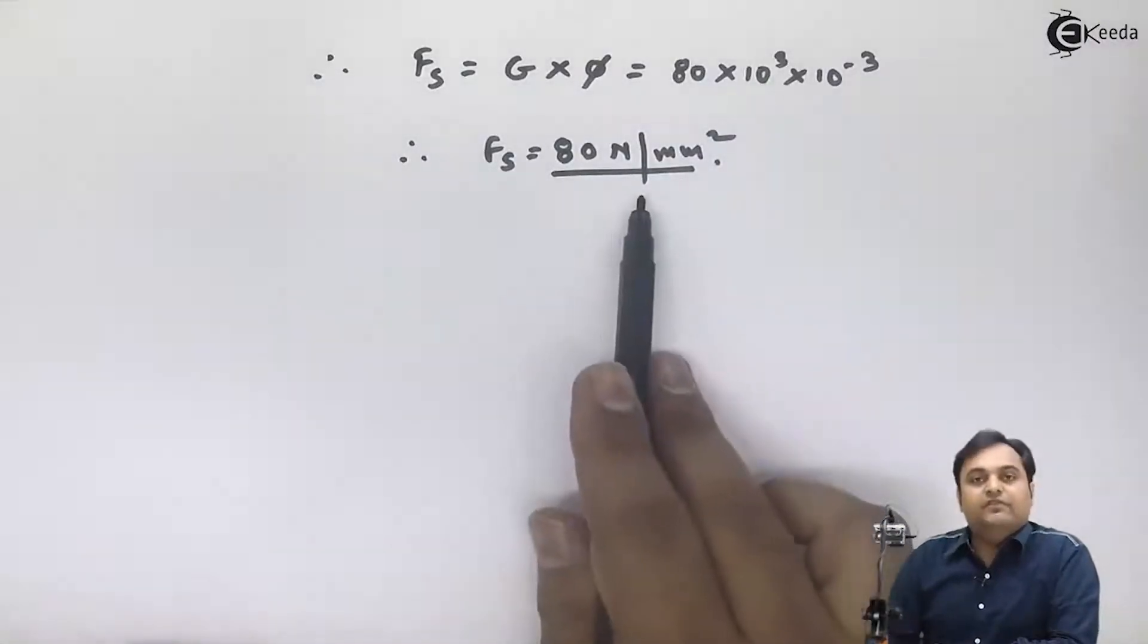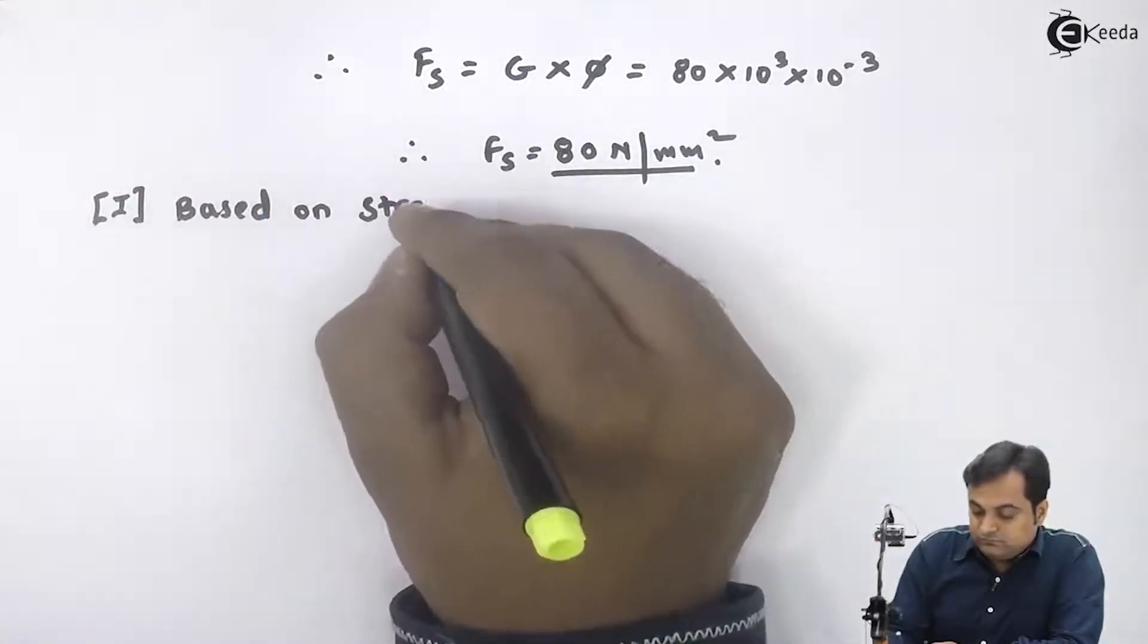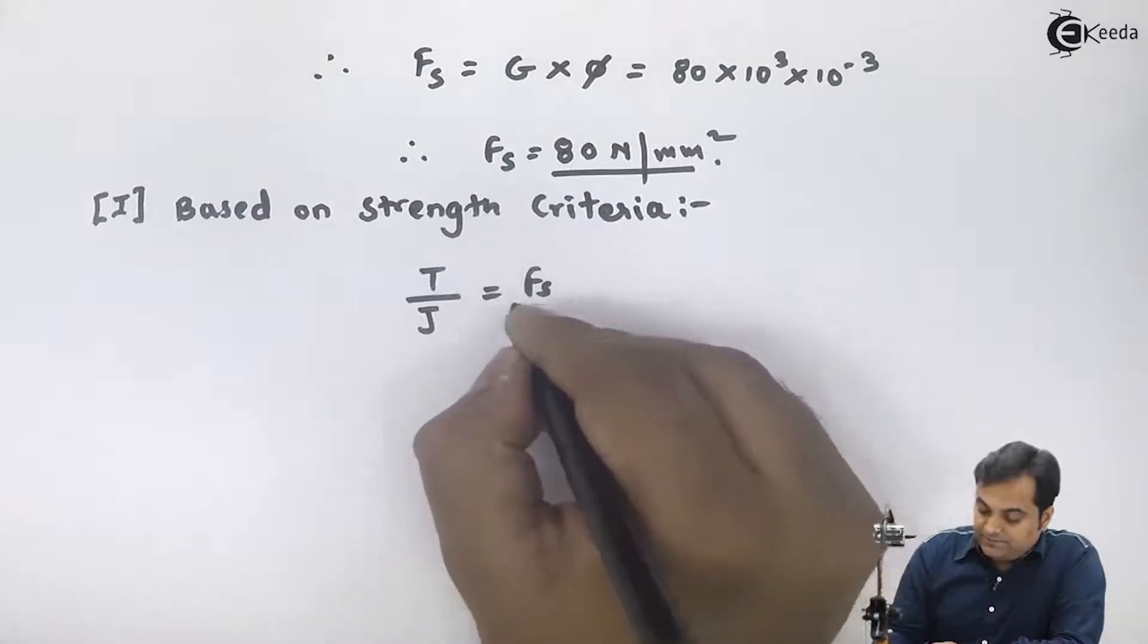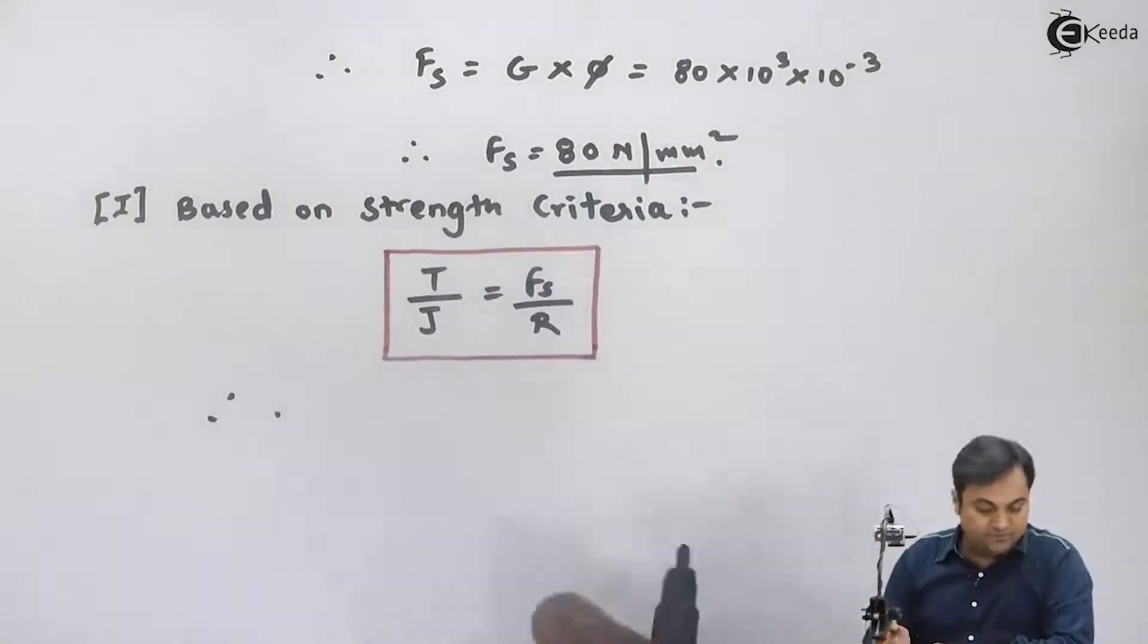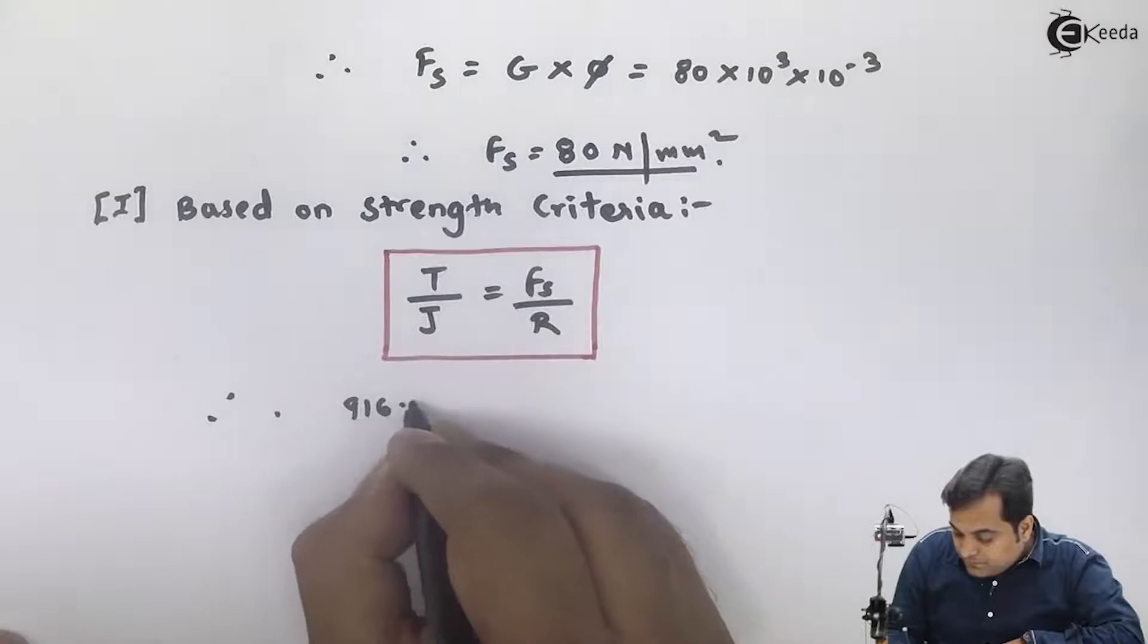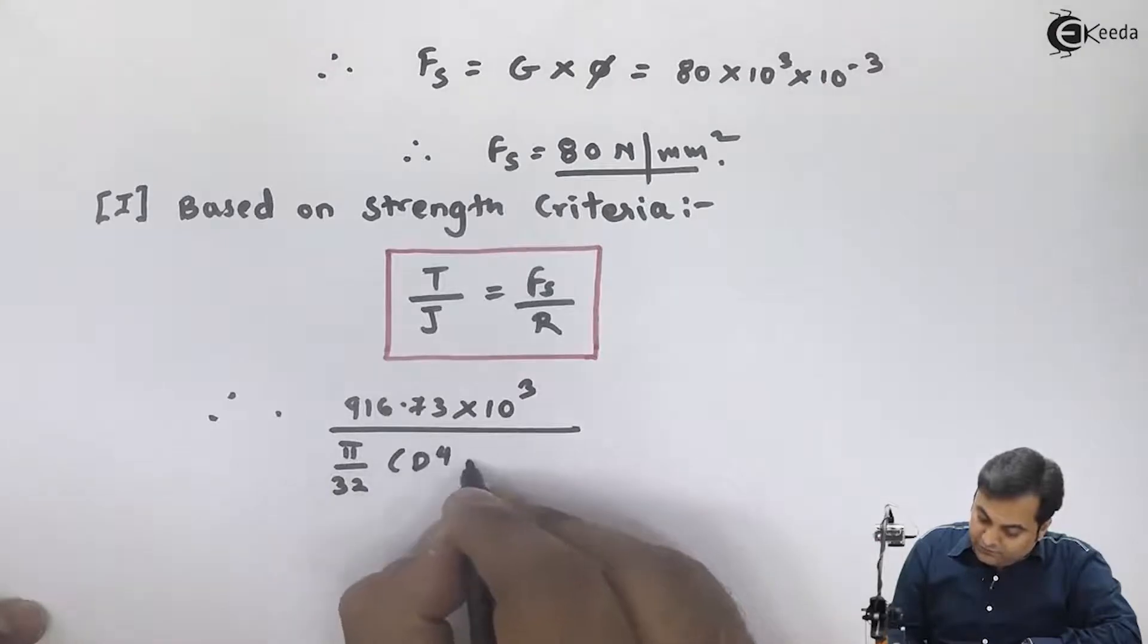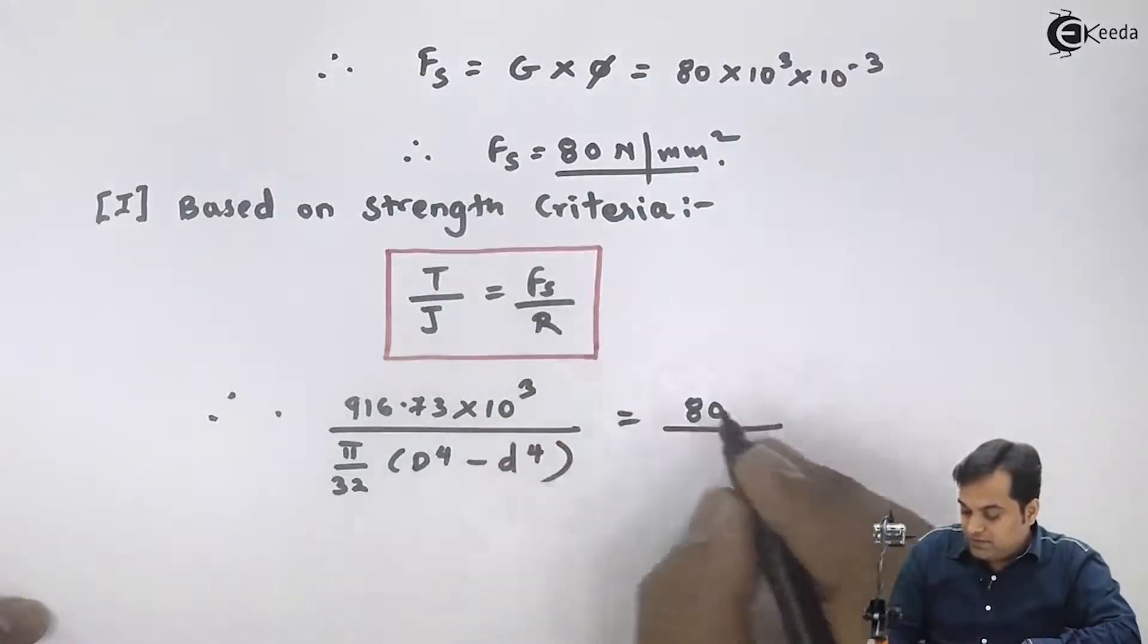Now once I know the value of fs, I can use the strength criteria. So based on strength criteria: T by J equals fs by r. Therefore the value of T, it is 916.73 times 10 to the 3. J for hollow shaft is π by 32 times capital D to the 4 minus small d to the 4. fs I've got the value as 80, r is d by 2.